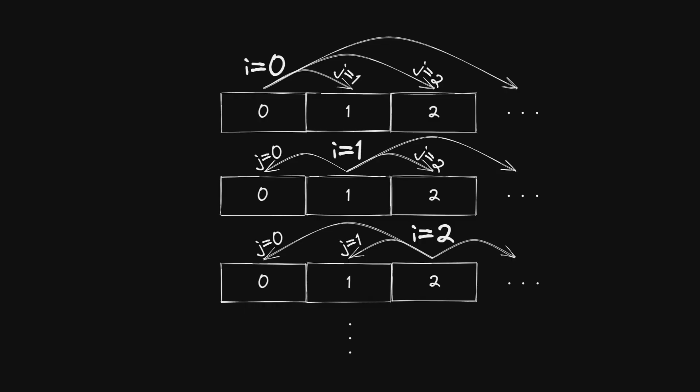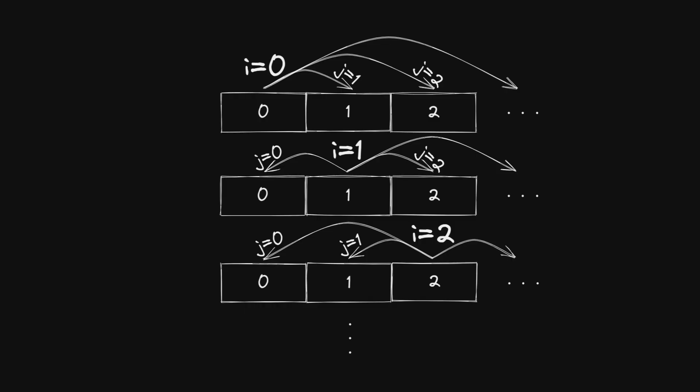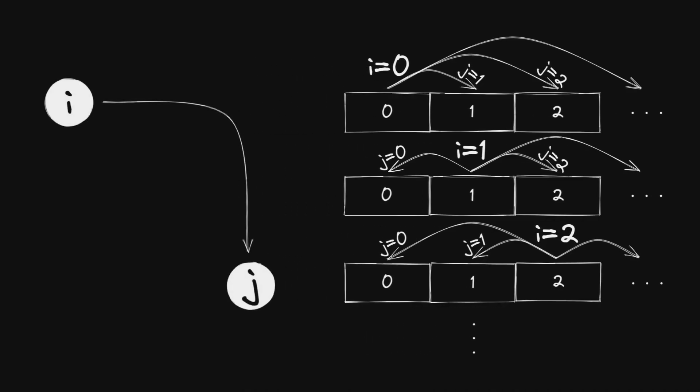What we need to notice is that when we calculate the acceleration from one body towards another, and then that other body towards the first body, we're using the same distance, but we're using the square root to calculate it twice. What we want is to be able to calculate the distance once, and then use it to accelerate i to j and j to i at the same time.